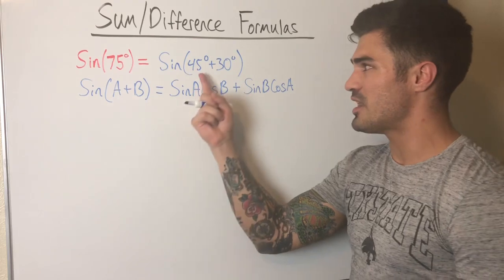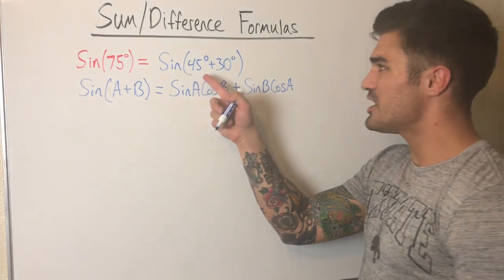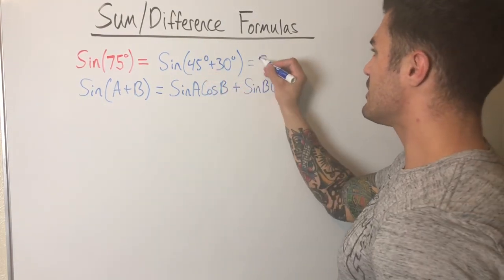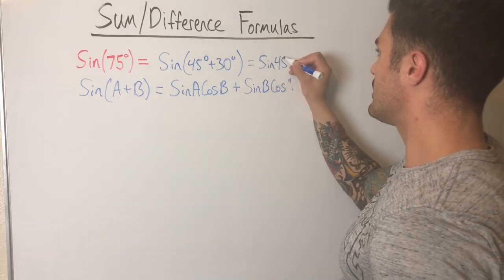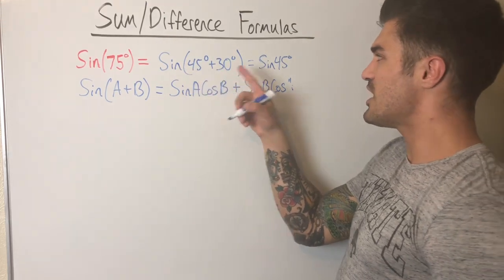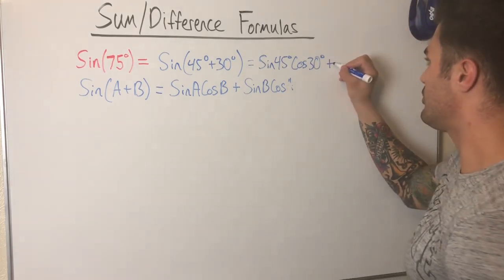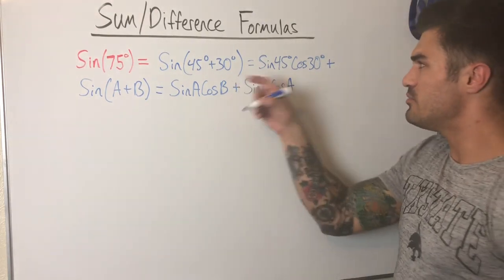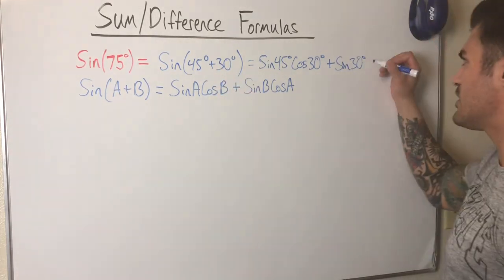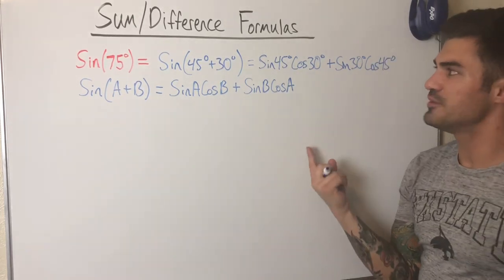So 45 degrees is my A and 30 degrees is my B. I plug them in: sine of 45 plus 30 equals sine of 45 times cosine of 30, plus sine of 30 times cosine of 45.